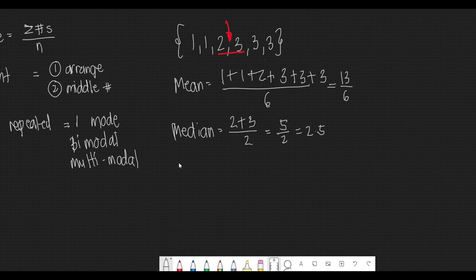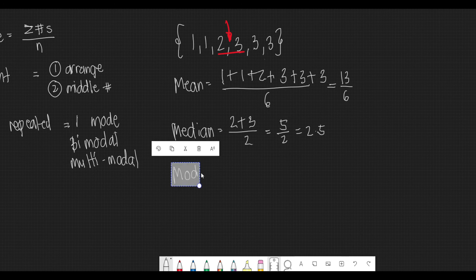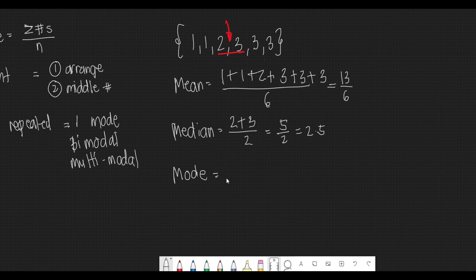Now, for the mode, this is the number that is most repeated. Since the number 3 is the number that's most repeated, the mode is 3. If you have questions, just comment down below.